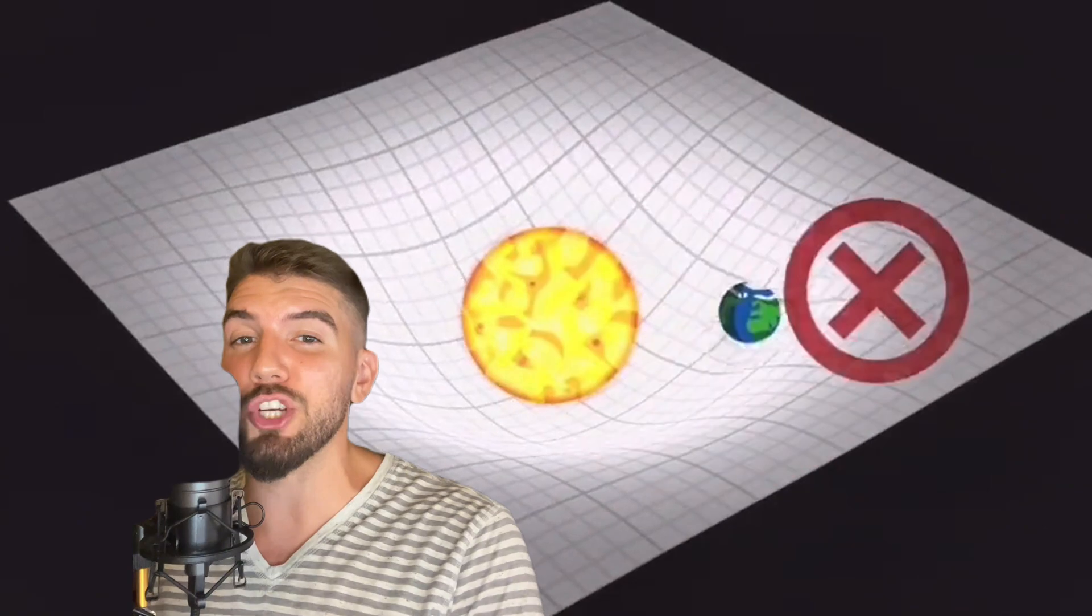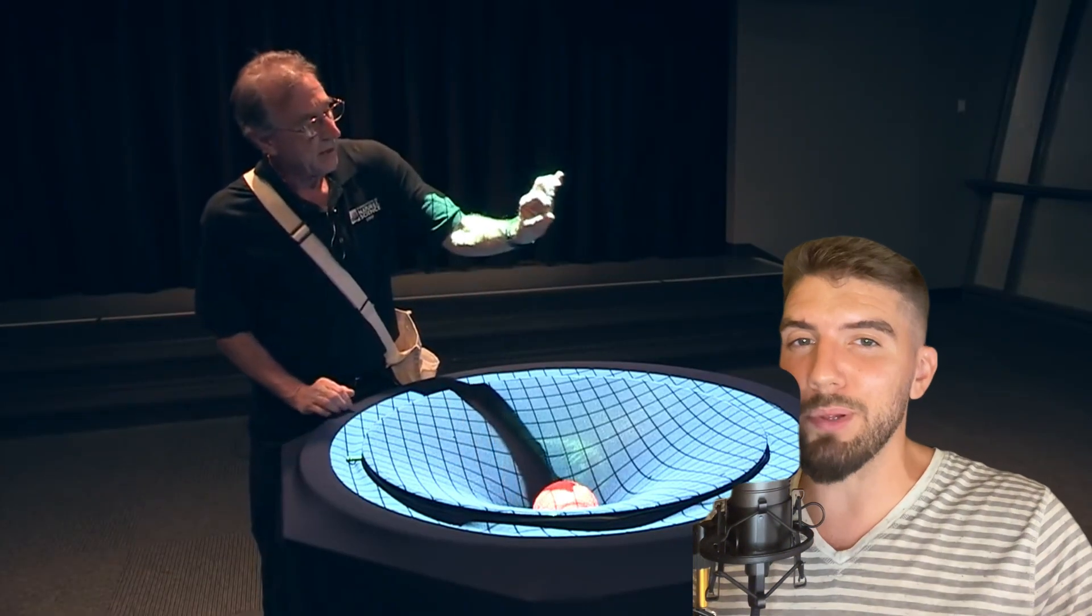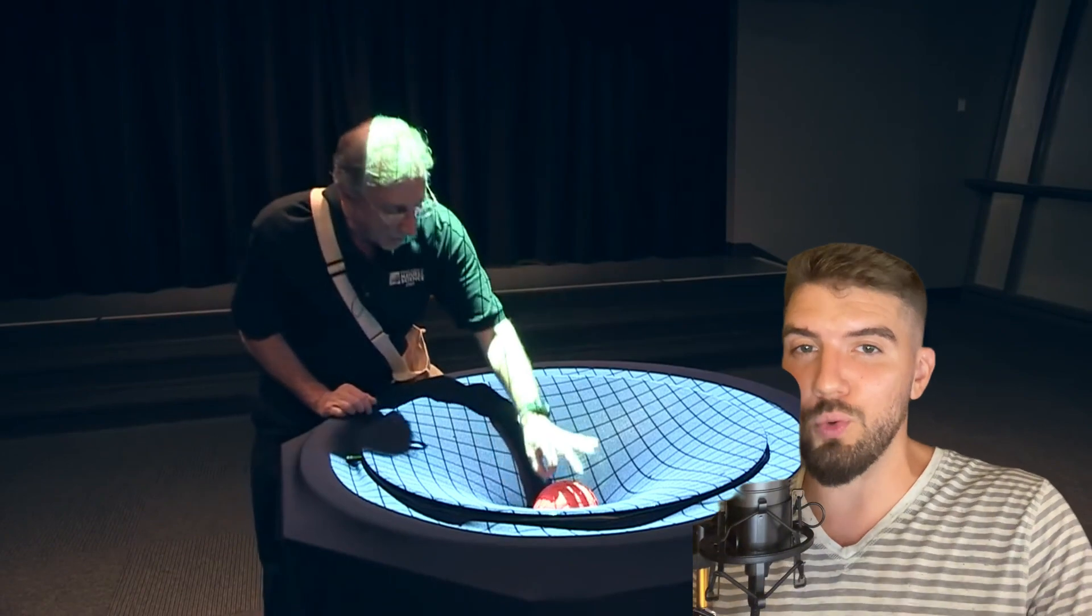So then Einstein hypothesized a new approach to gravity in which it no longer was a force, but rather any objects with mass physically bend the plane they exist in called space-time. Similar to a bowling ball on a trampoline, where the surface represents a 2D plane, and everything on the trampoline rolls towards the ball.